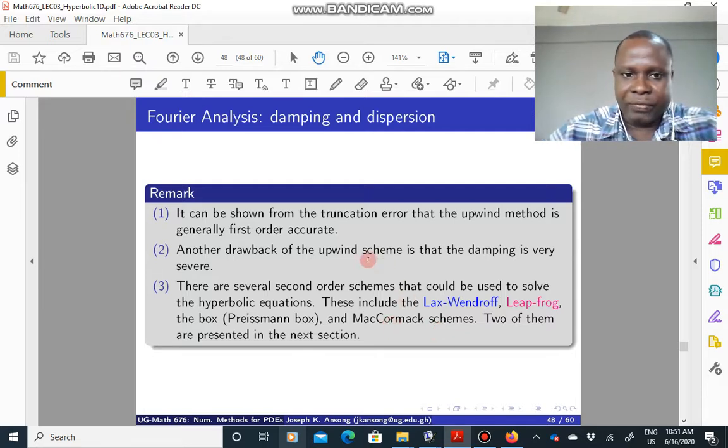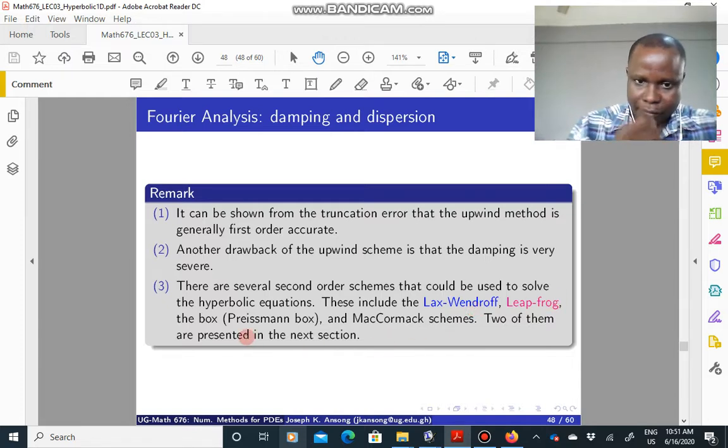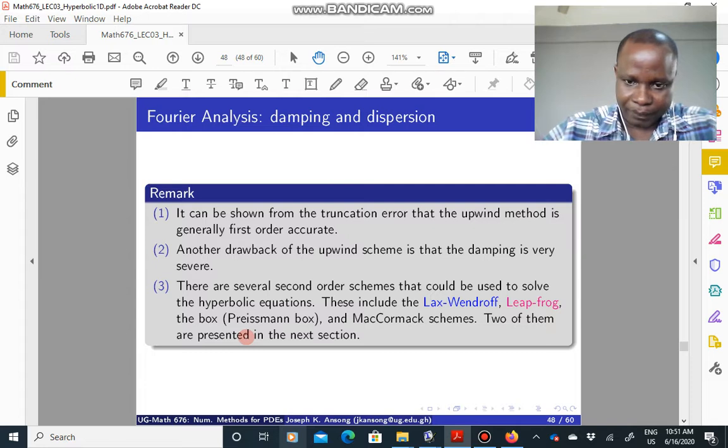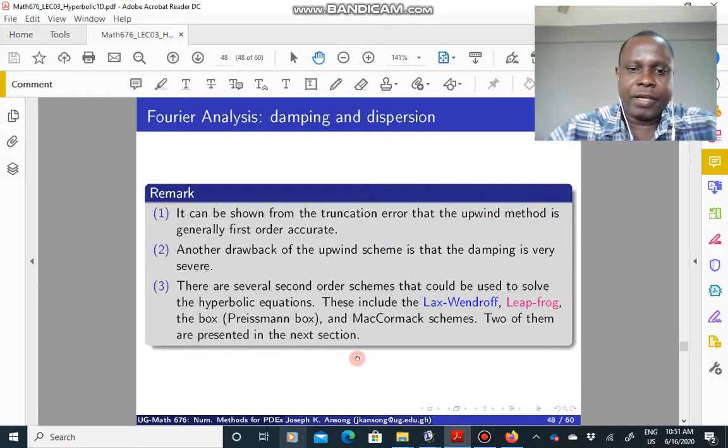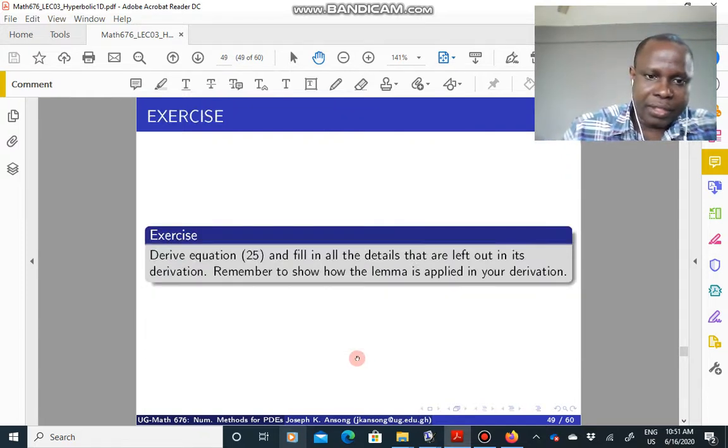Now, apart from the upwind scheme, which is first order accurate anyway, there are other schemes which are second order accurate. For instance, the Lax-Wendroff, the leapfrog, the box method or Preissman box, the MacCormack schemes that you could use to solve the advection equation. So in the next few slides, we will look at the Lax-Wendroff or the leapfrog schemes.